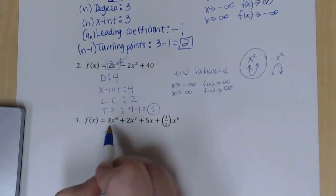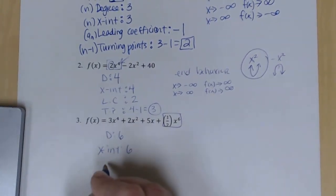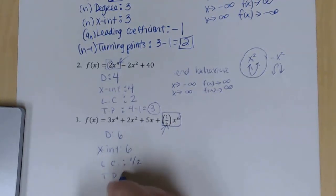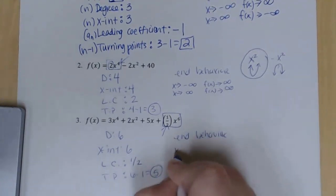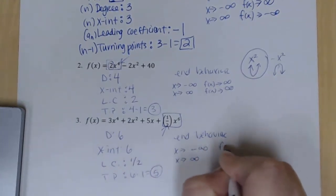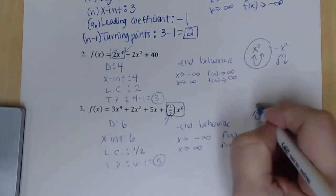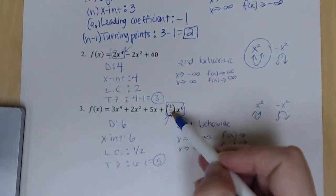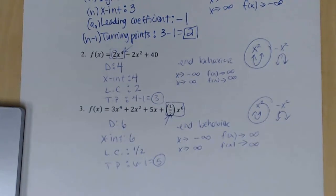For the end behavior of example three: the degree is even, and since one half is positive, it's similar to x² — both arms going up. As x → −∞ and x → +∞, f(x) → +∞. I didn't use the graphing calculator — I'm looking at what I know: it's even, similar to a quadratic, and both ends go to positive infinity. Feel free to Canvas message me if you have any questions.